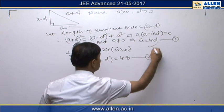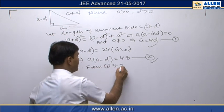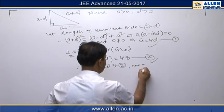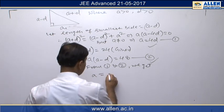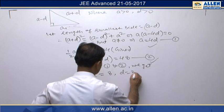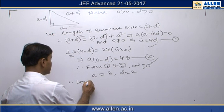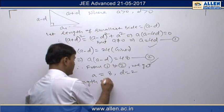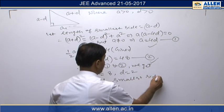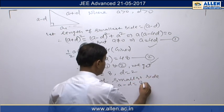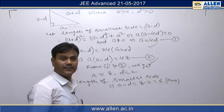Now on solving these two equations, we get the values a = 8 and d = 2. From these we get the length of the smallest side, which is a - d = 8 - 2 = 6. So the right answer for this question is 6.